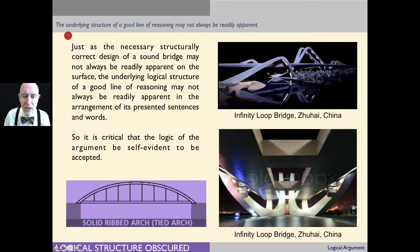Another concept to keep in mind is that the underlying structure of a good line of reasoning may not always be readily apparent. Just like if you look at, here's the infinity loop bridge in China. And if you look at that, it's not really obvious, at least to me, precisely what correct structural form it's relying on, that gives us its soundness. It happens to be a solid ribbed arch. But you wouldn't necessarily know that at first glance. And the same thing can be with arguments.